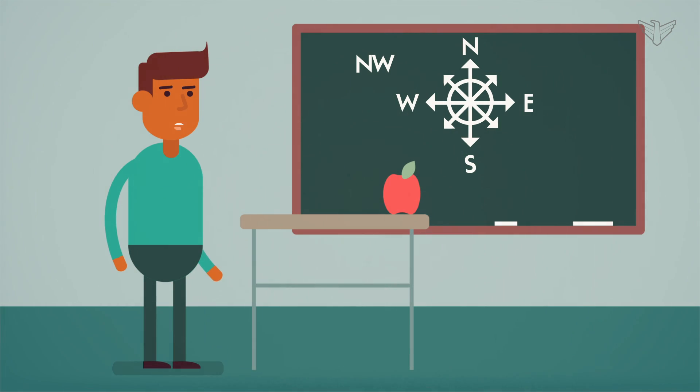You see, northwest is located halfway between north and west. Southwest is located halfway between south and west. Northeast is located halfway between north and east. And southeast is located halfway between south and east.